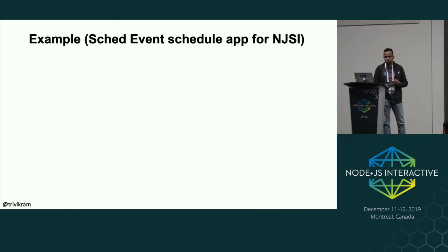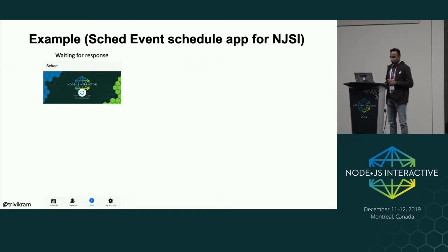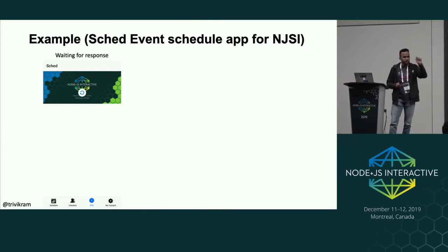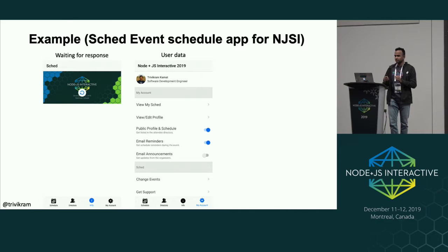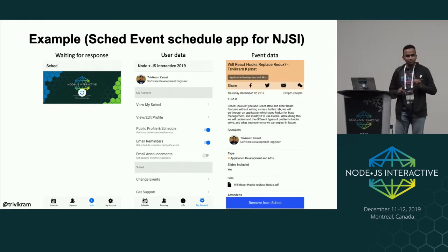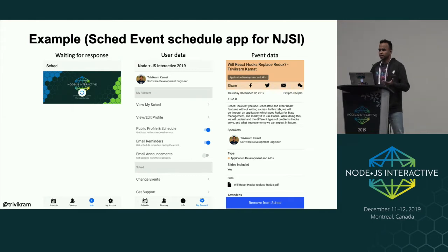Let's see the example app — a shared event scheduler app for Node.js Interactive. If you go to the info tab and reload, a loading bar appears — that is a user action. So 'isLoading' is true, show the loading bar; if false, show loaded data. If you go to my account, it shows account details — username and other things stored in state. Or event data: all of you are here for this talk, so talk title, talk description, and speaker name would all be stored in the state.